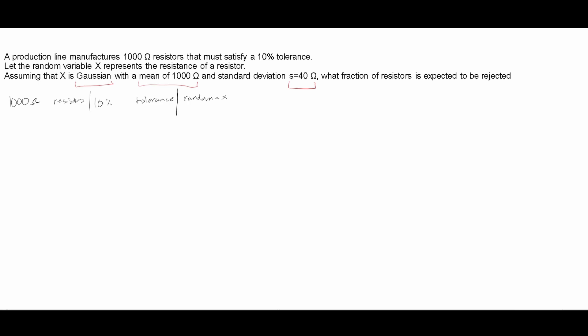What fraction of resistors is expected to be rejected? So we want to find the probability of rejection. We know that Gaussian has like a graphical kind of representation, right?